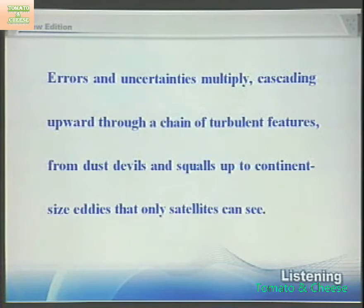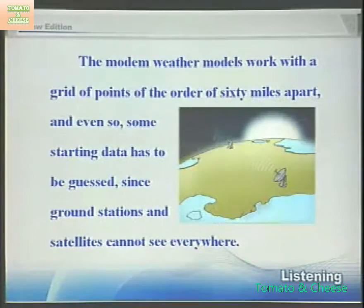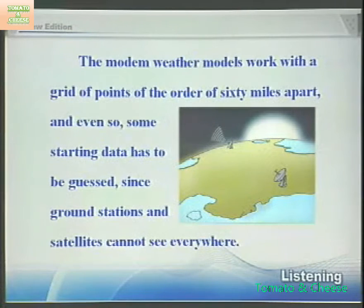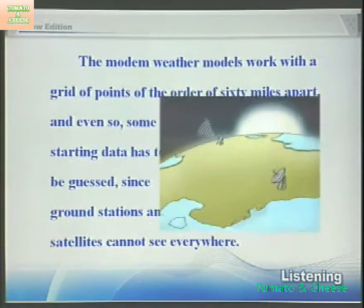Weather flows through a chain of turbulent features, from dust devils and squalls up to continent-sized eddies that only satellites can see. The modern weather models work with a grid of points of the order of 60 miles apart, and even so, some starting data has to be guessed, since ground stations and satellites cannot see everywhere.